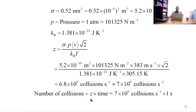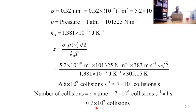Next, we multiply the collision frequency by the time to obtain the number of collisions a single molecule makes with other molecules. Substituting the collision frequency and time of 1 second gives approximately 7 × 10⁹ collisions.